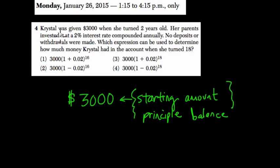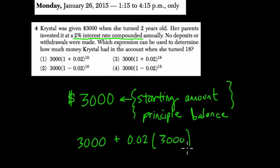Her parents invested it at a 2% interest rate compounded annually. That means that in the first year, we have $3,000 plus 2%, which is 0.02 of 3,000. That's our first year.